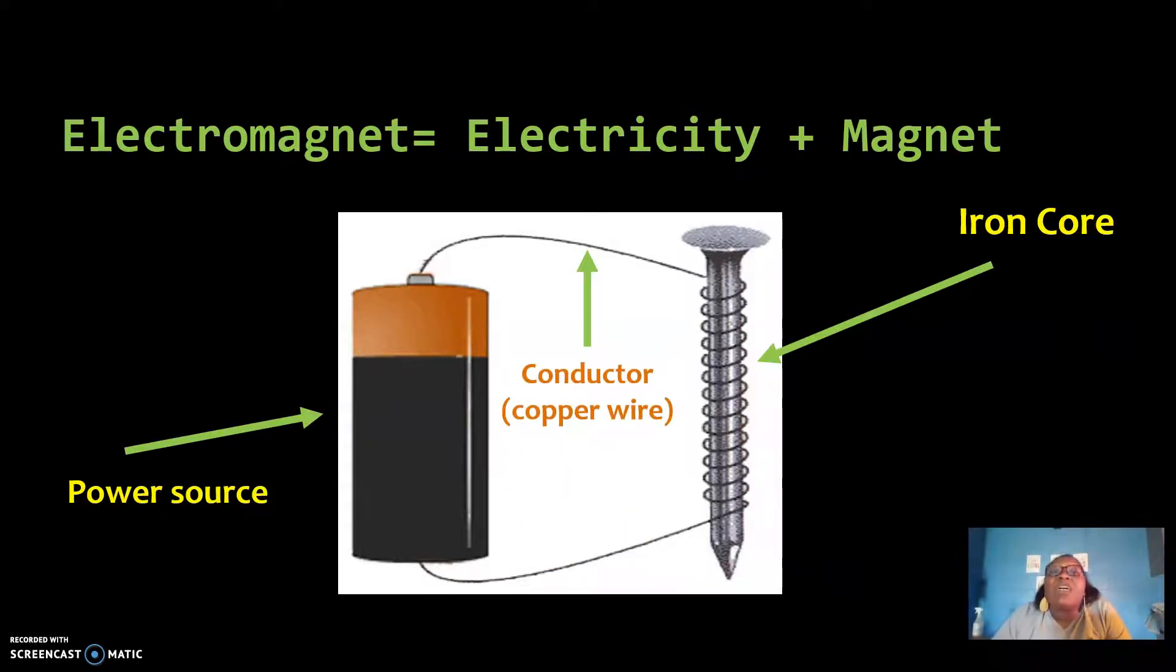And then a conductor. So we see two of the components that we have of an electric circuit are there. And then we see that magnet, that iron core is added there. You see in the construction of this electromagnet that our copper wire is wound around that iron core in coils. Those coils are important. And we'll talk about why in a second. Please pause this video as you draw this picture and label the parts of an electromagnet.